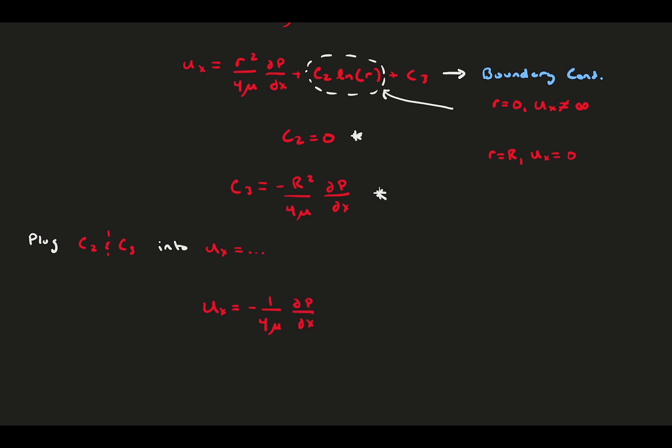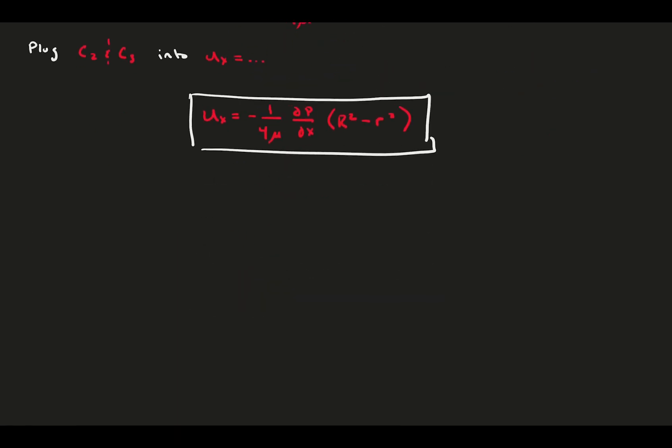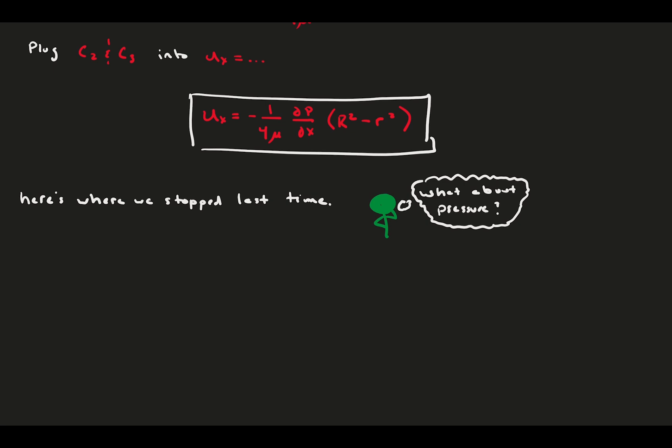At this point, we know all of the velocity components as functions. u_x is here, u_r is zero from conservation of mass, and u_theta is zero from an assumption. This is where we stopped with channel flow, solving only for the velocity field, but it's reasonable to wonder why we don't explore the pressure further. The pressure gradient shows up in the velocity equations. Can we learn more about it? We can, and the way we learn about it is by looking at the other momentum equations.